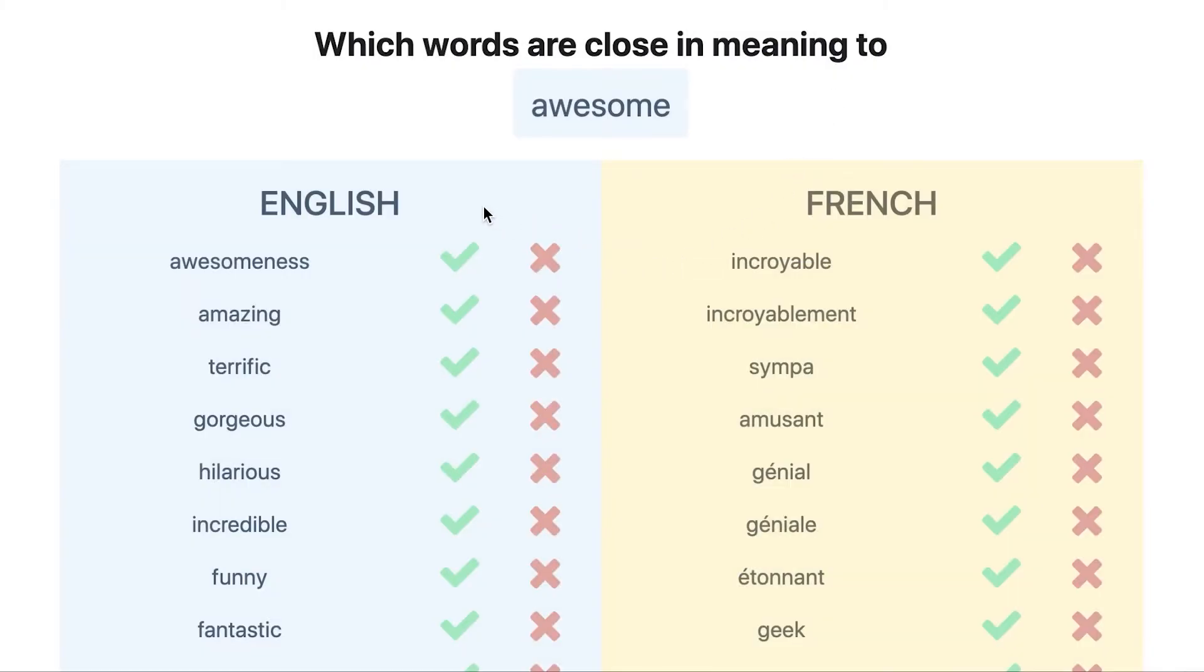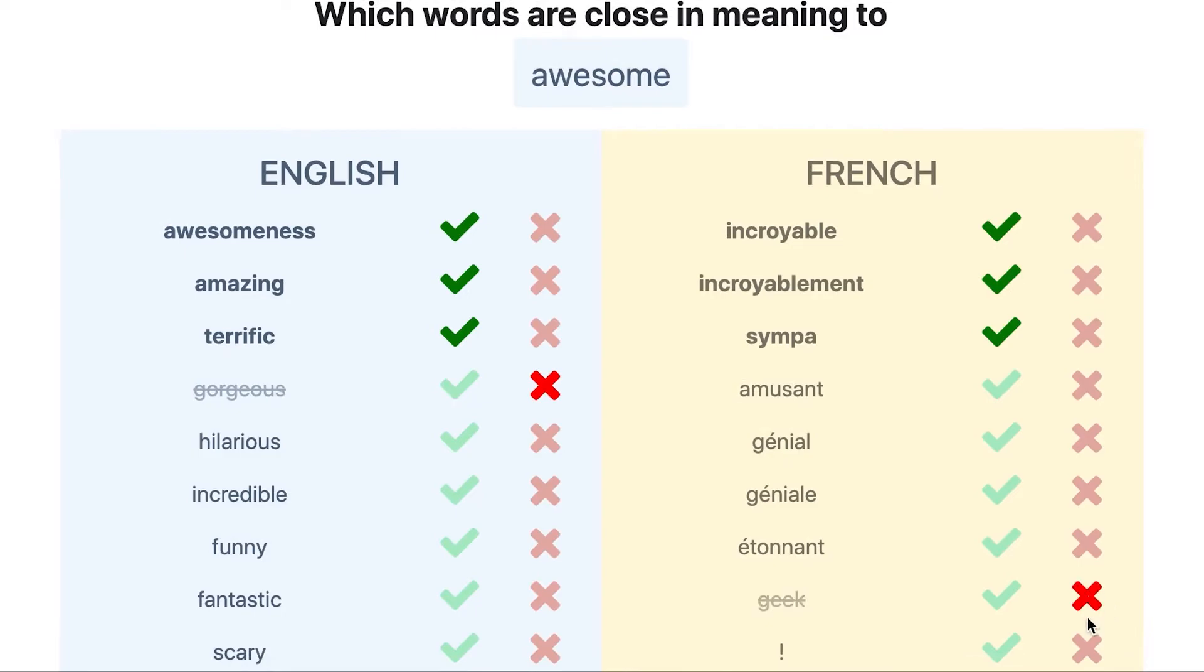Now, the user's goal is to annotate similarity between the keyword and its nearest neighbors or dissimilarity. And the user may choose to skip over any words they don't feel like annotating.